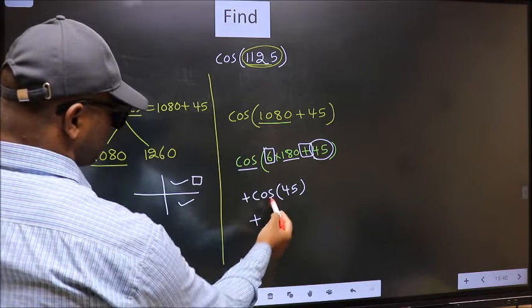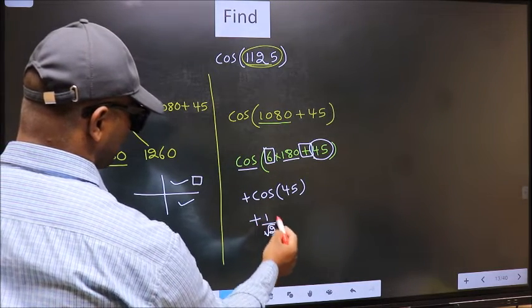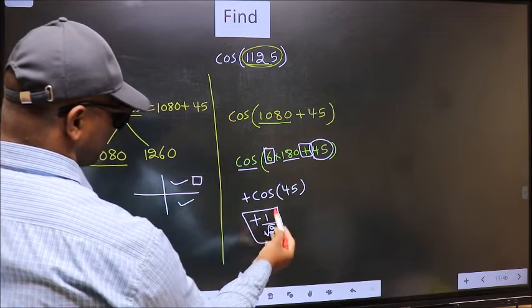So plus cos(45°) is 1 by root 2. This is our answer.